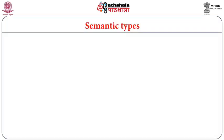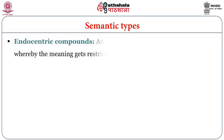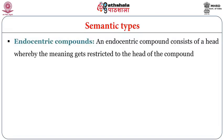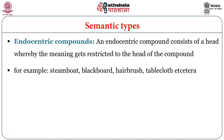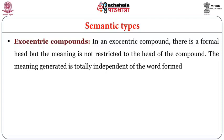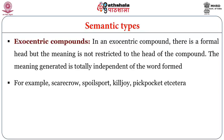It is important to understand semantic types related to compounding. An endocentric compound consists of a head whereby the meaning is restricted to the head of the compound, like 'steamboat', 'blackboard', 'hairbrush', 'tablecloth'. An exocentric compound has a formal head but the meaning is not restricted to it — the meaning generated is totally independent. For example, 'scarecrow' is neither a crow nor a scare, 'pickpocket' and 'spoilsport' are independent words.